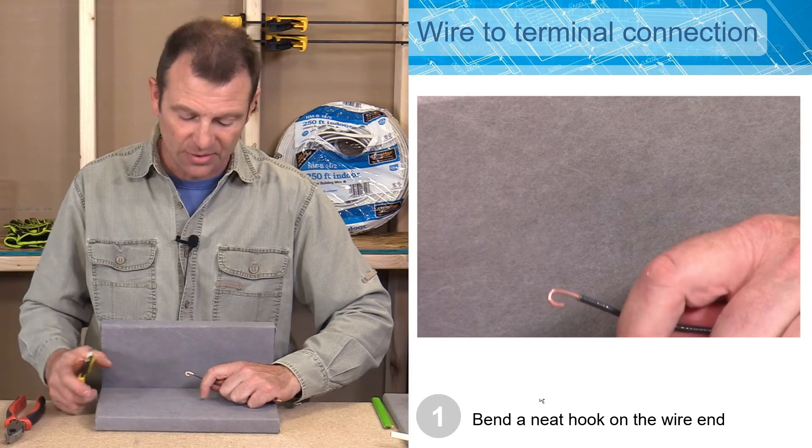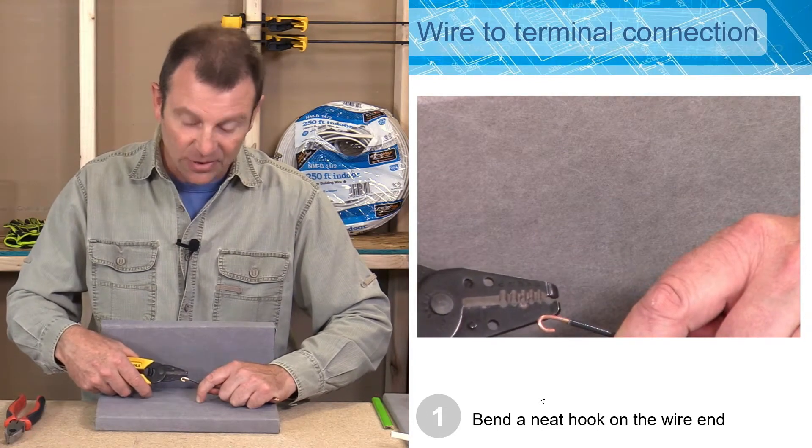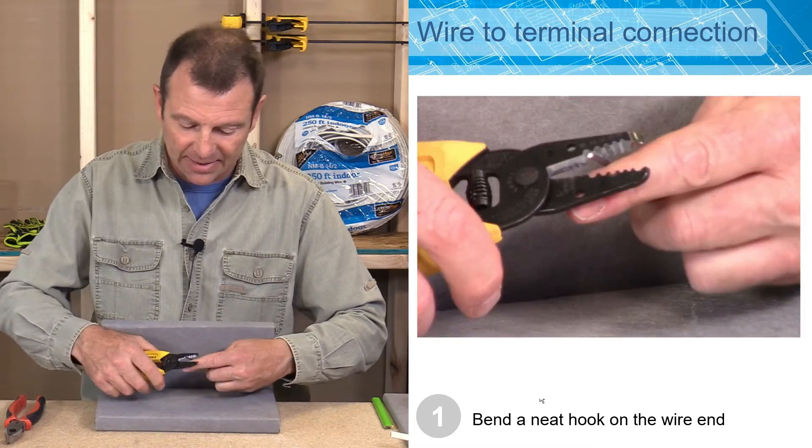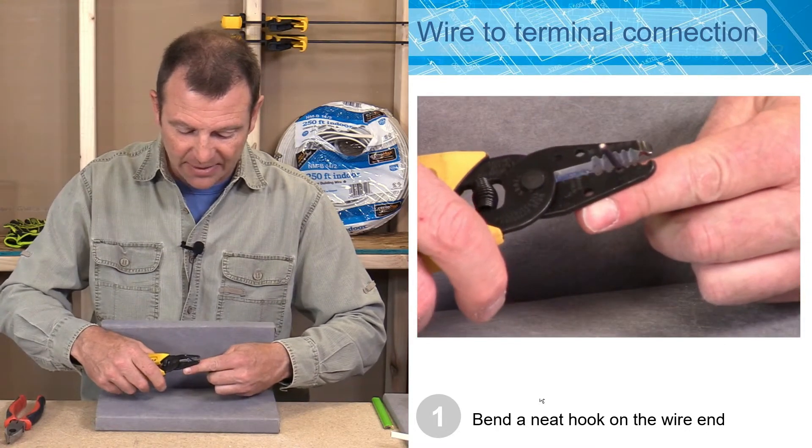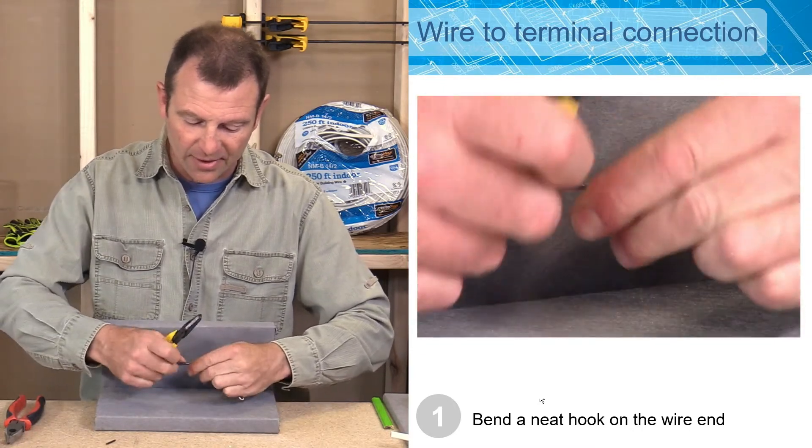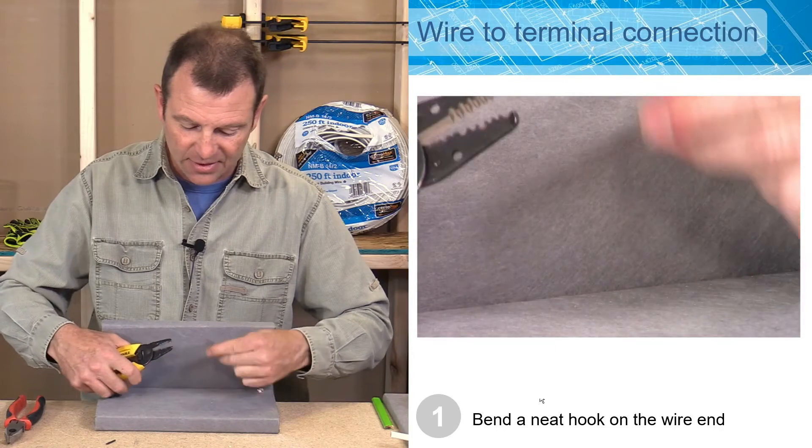I don't like that one. We're going to do it again. The reason is because I have too much length on the back here. So we're going to start all over again for that one. So we'll clip it clean. I'm going to strip this about five-eighths of an inch back. I'm going to peel the wire off. Now I'm going to start over.